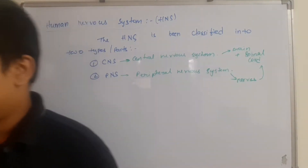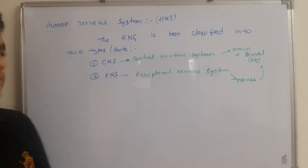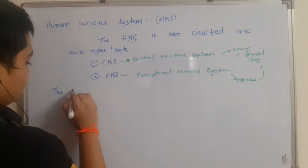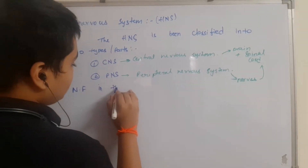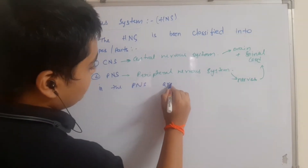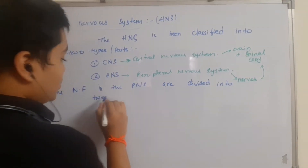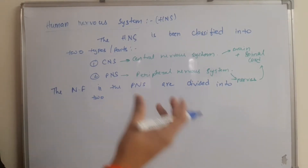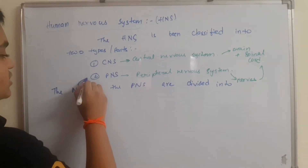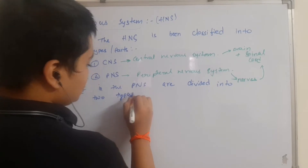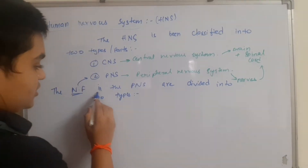Now let's talk about the PNS. The nerve fibers — a group of neurons — in the PNS are divided into two types. I may sometimes say muscle fibers since we just completed the locomotion chapter, but please remember it is nerve fibers. NF means nerve fibers, divided into two types in the PNS.